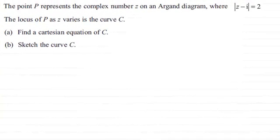Hi there. In this question, we're given that the point P represents the complex number z on an Argand diagram, where the modulus of z minus i equals 2. The locus of P, as z varies, is the curve C.